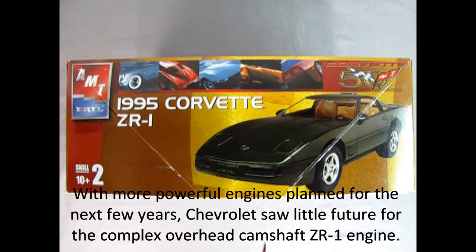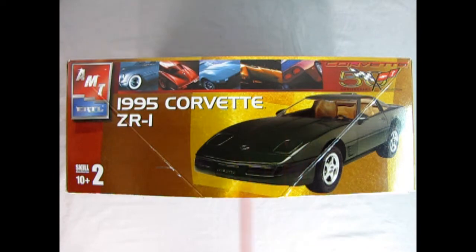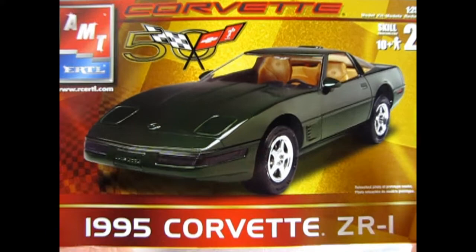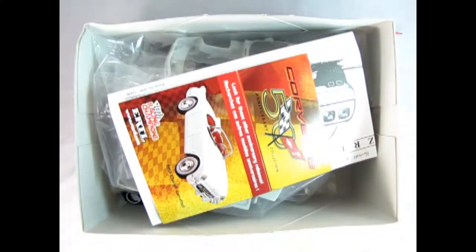And if we flip the box over to the B side, we can see this wonderful three-quarter front view of our 1995 Corvette ZR1. So now let's open up the lid on our great Corvette model kit as we check out the contents inside.